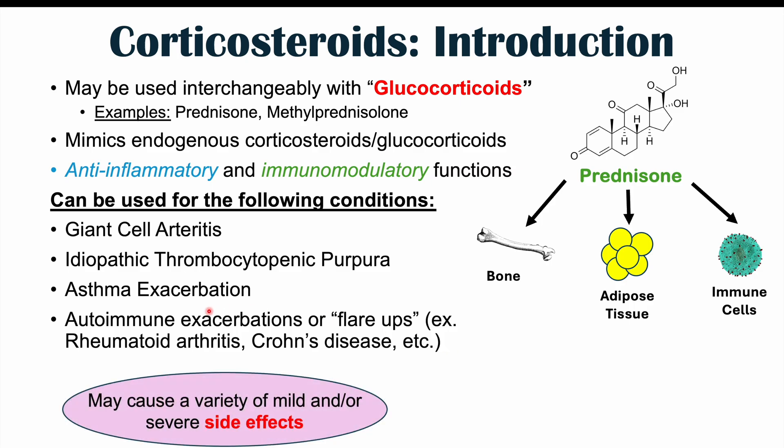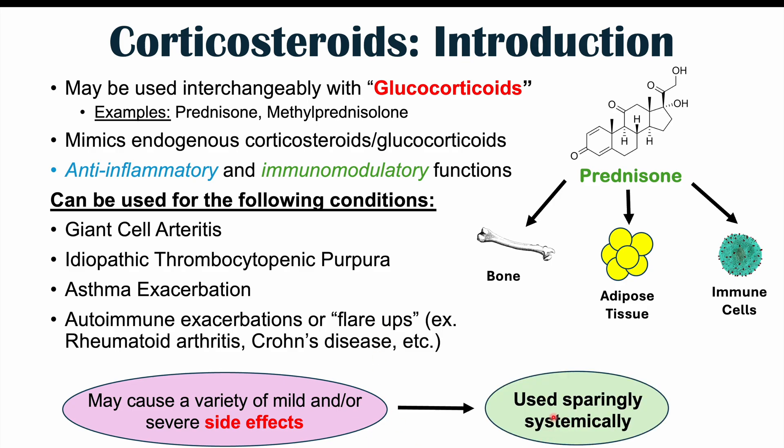The reason we use corticosteroids mainly for autoimmune exacerbations or flare-ups is because we generally try to avoid their use, as they cause a variety of mild and/or severe side effects across many different systems. So we try to use systemic corticosteroids sparingly because of the many health consequences we'll discuss in upcoming slides.